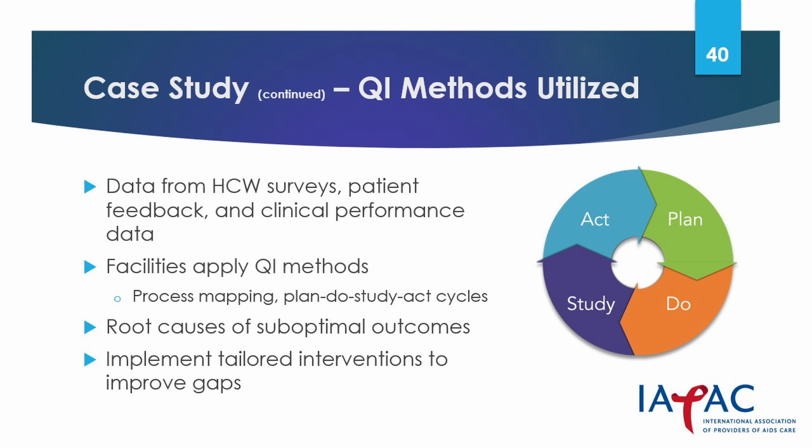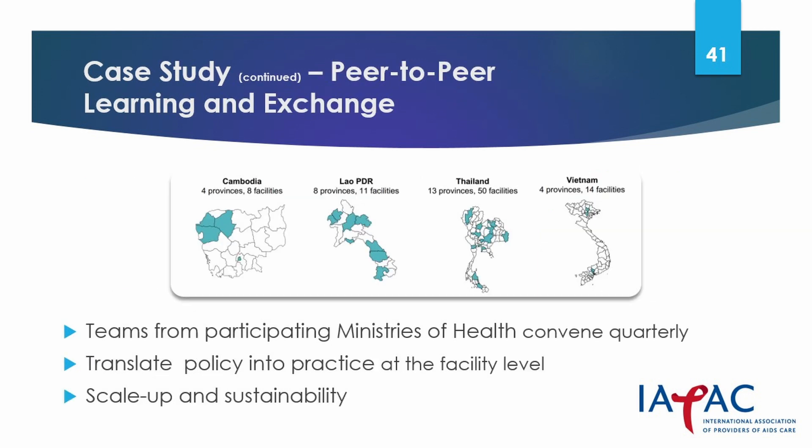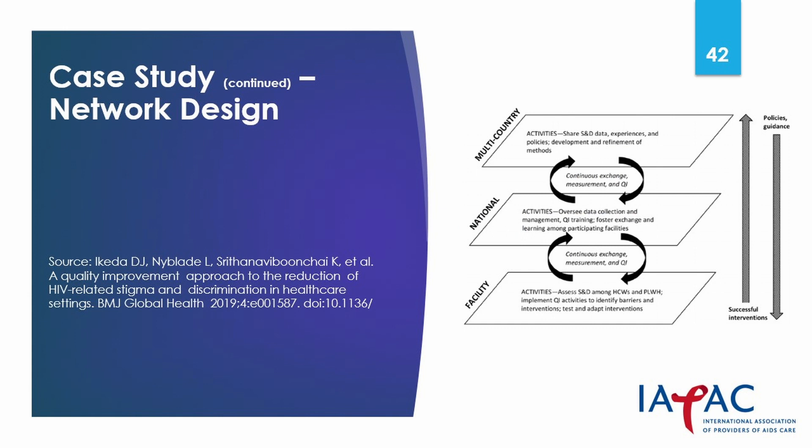Through this process, a broader conceptualization of quality of care was forged, in which stigma and discrimination reduction activities and people-centered services were explicitly designed to attain the 95-95-95 goals. To share successes and challenges and create implementation strategies, teams from participating ministries of health convened on a quarterly basis, discussing translation of policy into data-driven practice at the facility level and developing plans for scale-up and sustainability. By design, the network seeks to foster peer learning exchange at the local, national, and international levels.